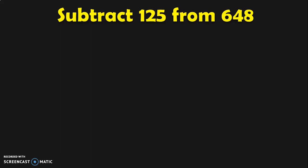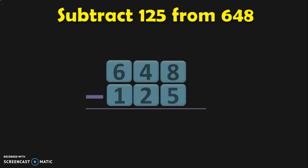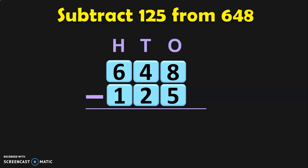Subtract 125 from 648. Here we are going to subtract a three-digit number from another three-digit number. We write the numbers one below the other, write down the place values, and begin the subtraction from the ones place. I always insist on writing the place values because it helps children write the numbers in their correct places.